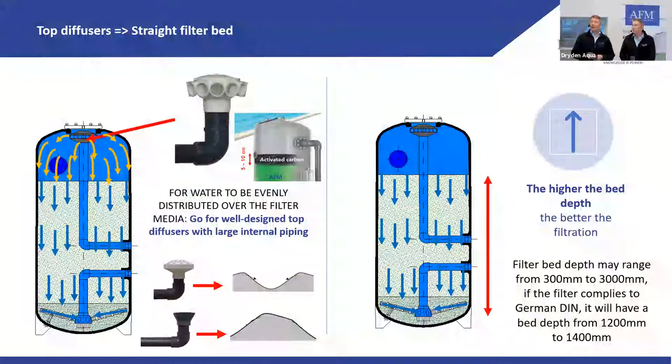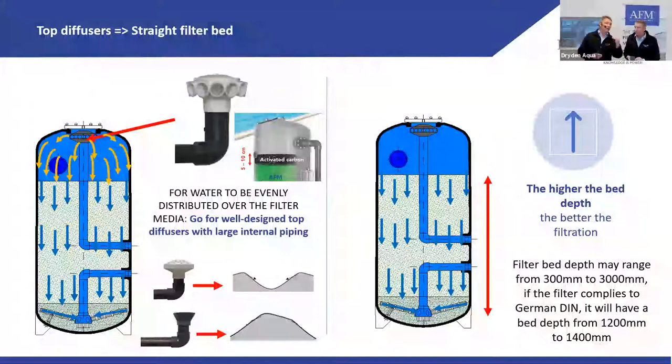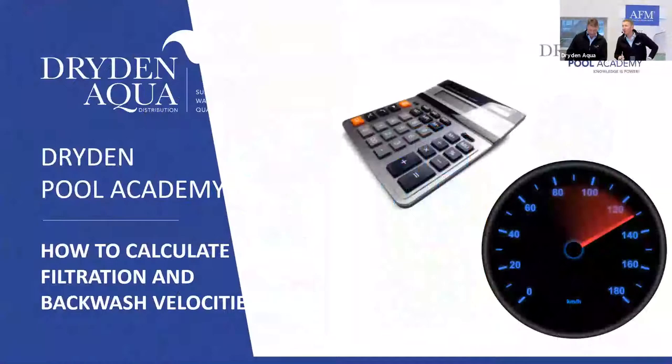Regarding filter bed height: the higher the better. Performance tests show that with a one-meter filter bed you get optimal results. At only 50 cm of bed depth, performance drops by roughly 30%.